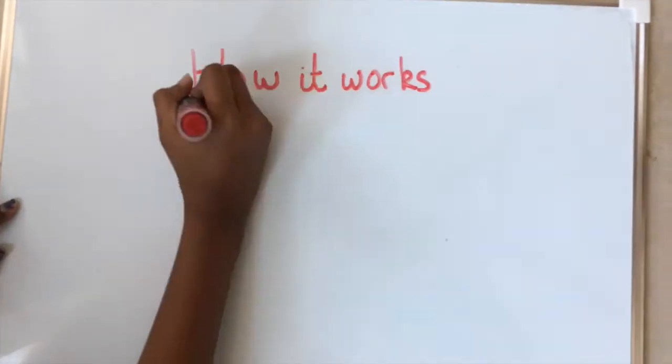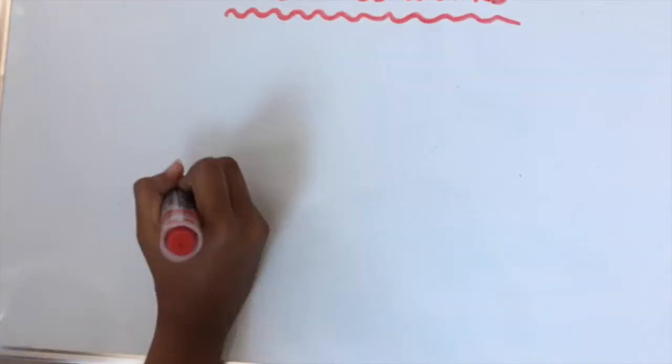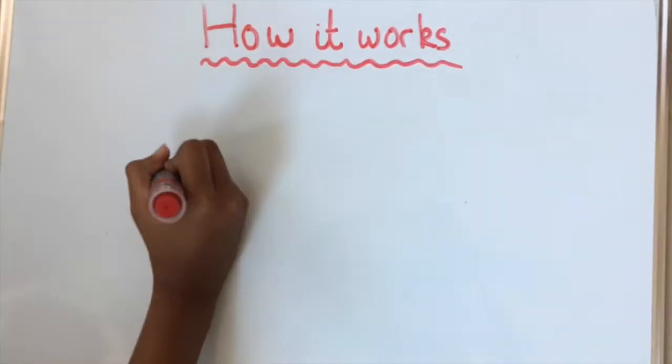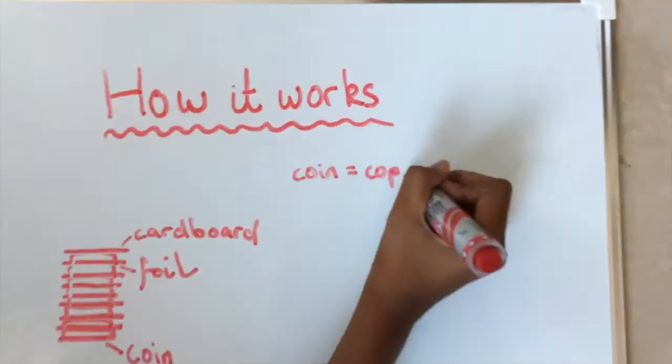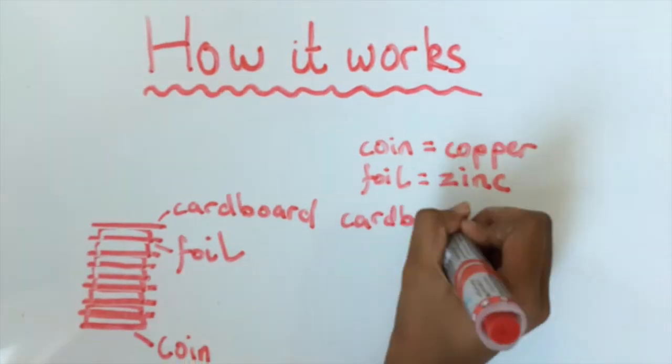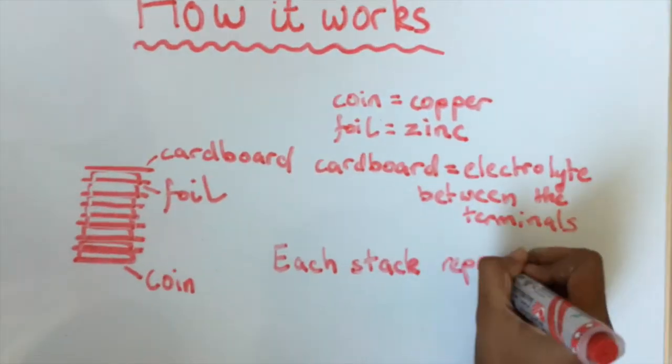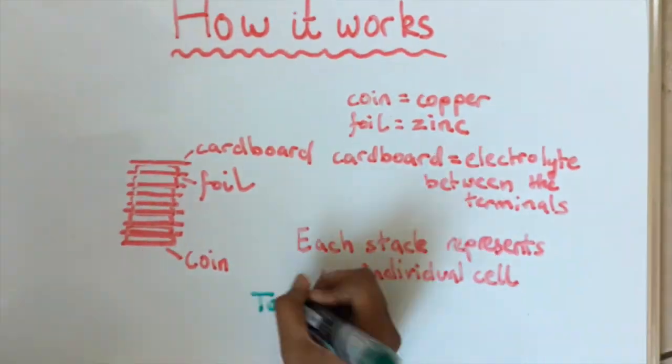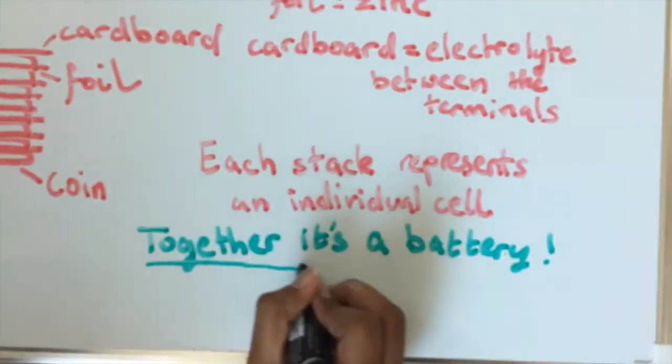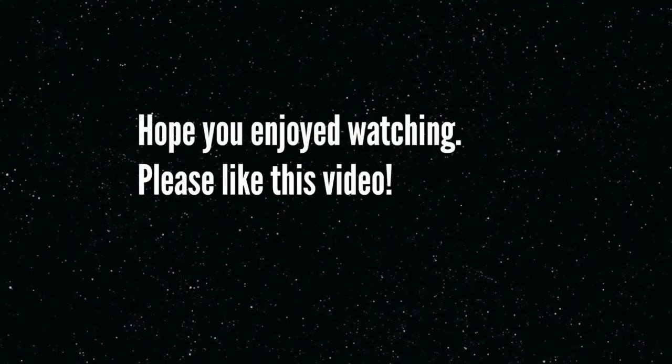So how does it work? The battery consists of a copper penny, vinegar-soaked cardboard, and tin foil. The coin acts as copper, the foil acts as zinc, and the cardboard acts as an electrolyte between the terminals. Each stack represents an individual cell. Together, it forms a battery. Thank you!